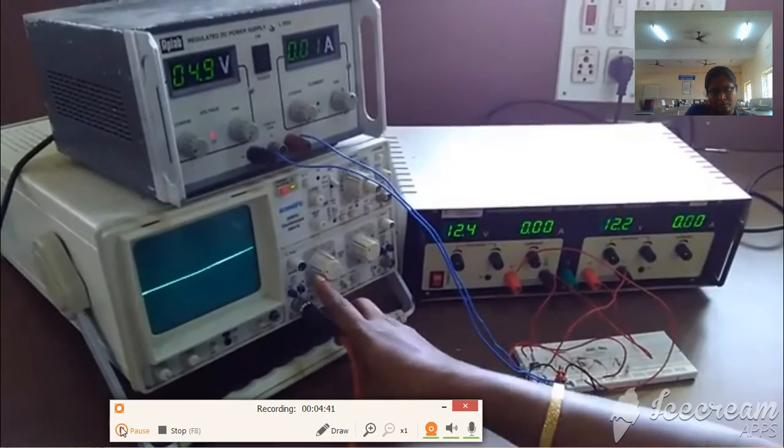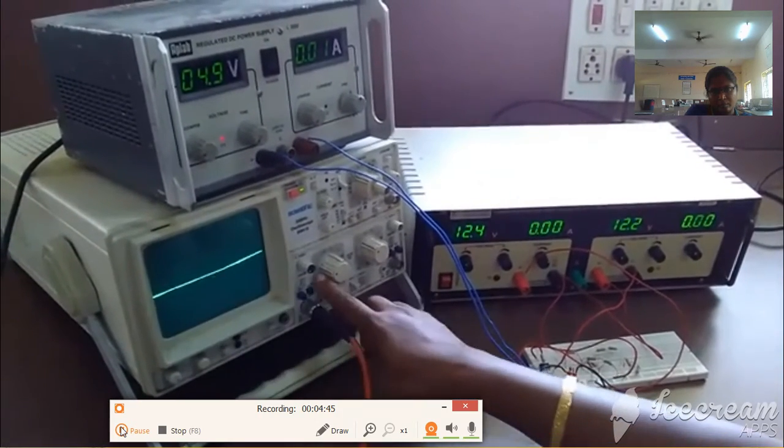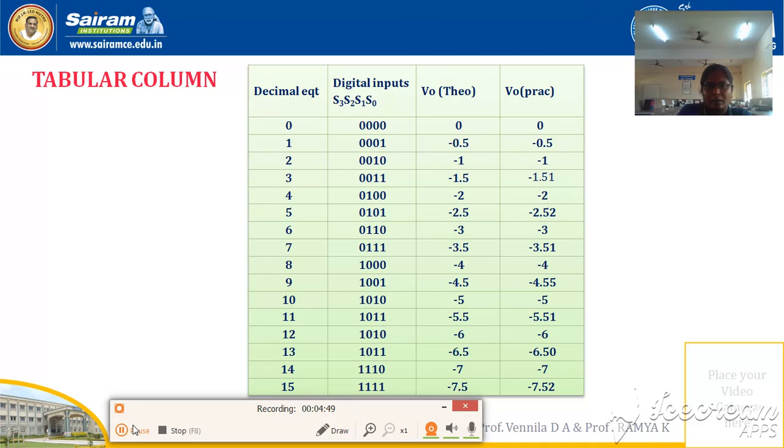Now I am getting 0.2 times 2, which is minus 0.4V. So the output will be taken from the circuit diagram, which I have shown here.